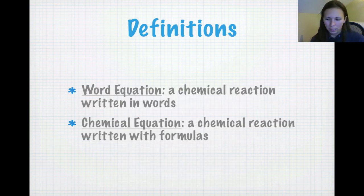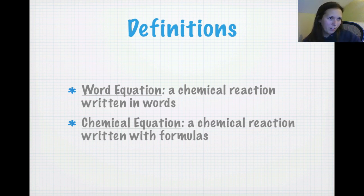Just a couple definitions going into writing and balancing chemical equations. A word equation, as you may understand, you know that a word equation in math is something like Sally is traveling 50 feet this way and Johnny is traveling 50 feet this way. So, how long is it going to be before they meet? That's a word equation in math. In chemistry, it's a chemical reaction written in words. So, we're going to say, I take this much of a substance and this much of a substance and react them together and they form this.